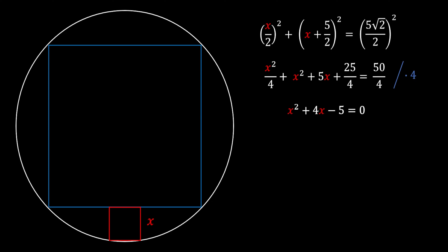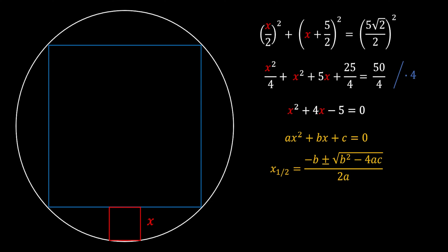We can solve this in a variety of ways, but here I'll use the quadratic formula. For a quadratic in standard form ax² + bx + c, the formula is x = (−b ± √(b² − 4ac)) / 2a. In our equation, a = 1, b = 4, and c = −5.